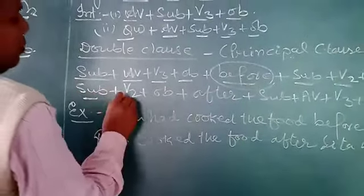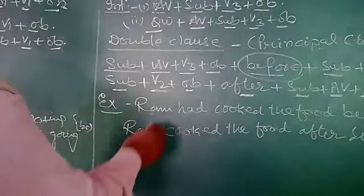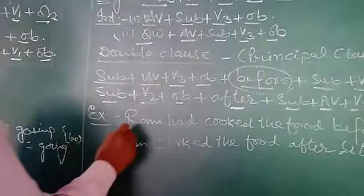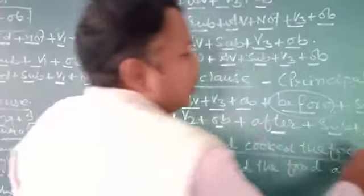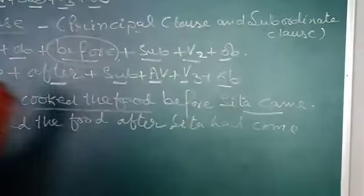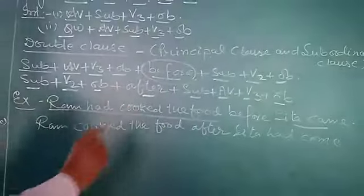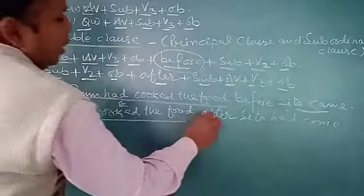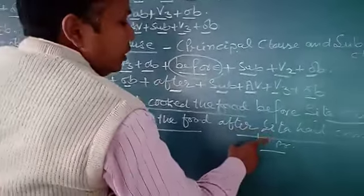For example: 'Ram had cooked the food before Sita came.' See carefully — whose work finished first? Ram had cooked the food, meaning Ram completed his work before Sita came. Sita was on the way when Ram had already cooked the food. So Ram's work finished first, then Sita's work finished. Ram's clause is the principal clause and Sita's is the subordinate clause. Similarly: 'Ram put the food after Sita helped him' — here the work done first is the principal clause and the work done second is the subordinate clause.